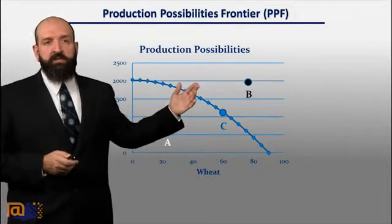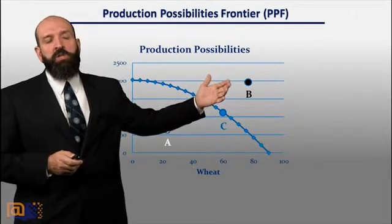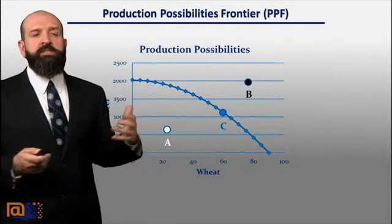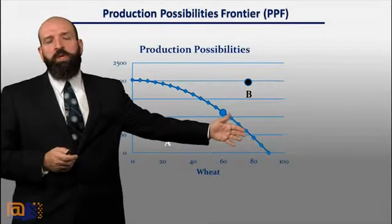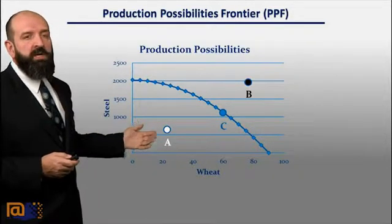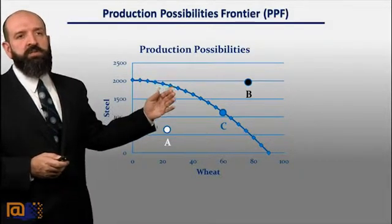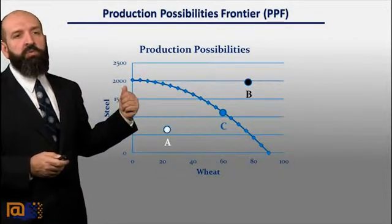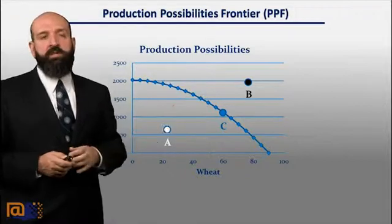Point B, on the other hand, is unattainable because that far out, the resources could not, given the current state of technology, be allocated between both wheat and steel to reach that point. So if you want to produce that much wheat, your steel production has to come down quite a bit — to say, a thousand units per year. On the other hand, if you want steel production at 2,000 units per year, your wheat production will almost have to be zero.